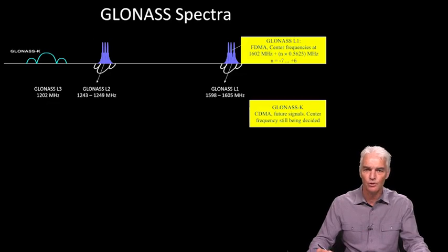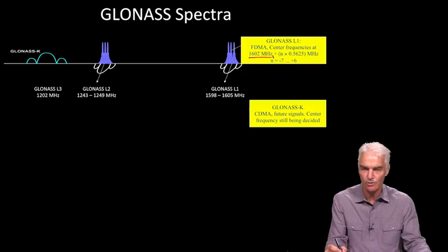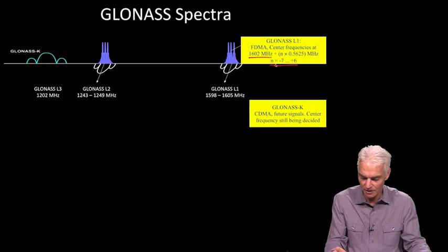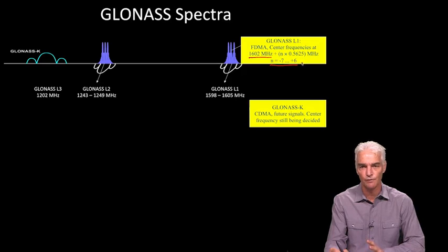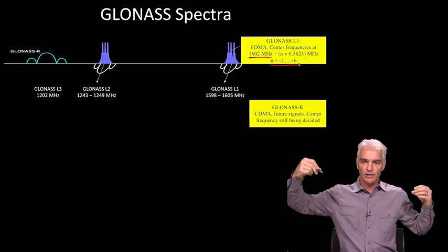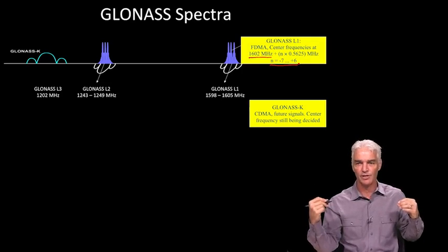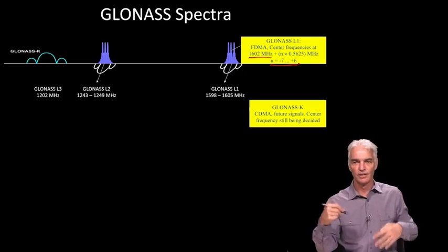This sets us up to look at the signal structure and frequency spectrum for GLONASS. Where we saw a sinc function for GPS, what we see here is multiple sinc functions. There are 14 of them. They're organized with approximately a central frequency at 1602 megahertz. GLONASS L1 is centered at 1602, and for the different satellites they vary this number N from minus 7 to plus 6, so that's 14 total. Each of these Ns gives you a different center frequency for a different satellite.